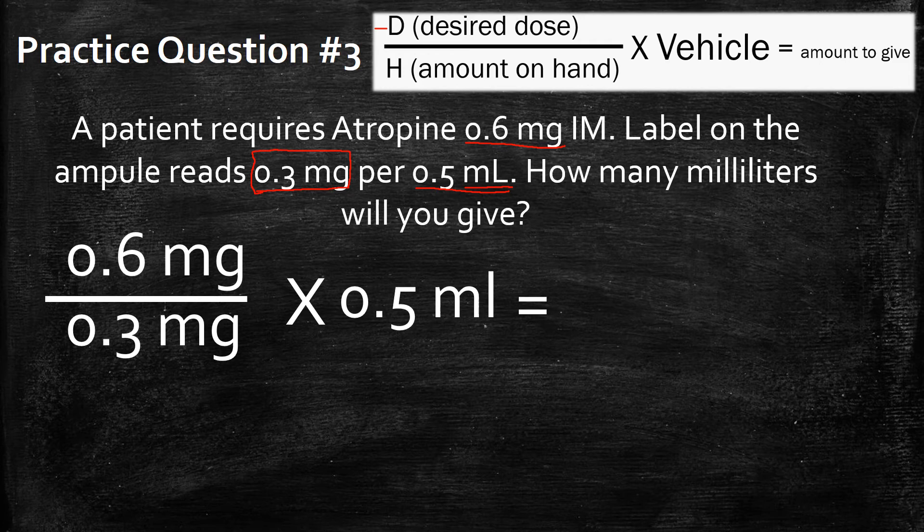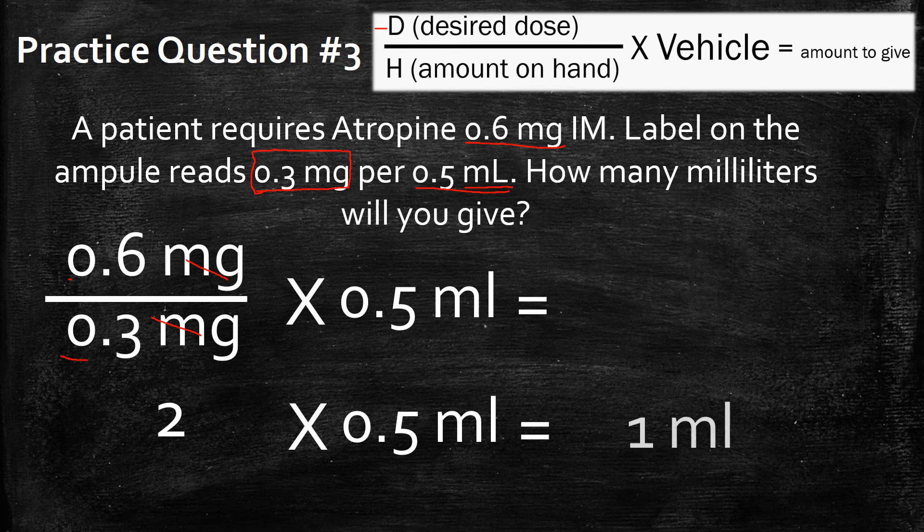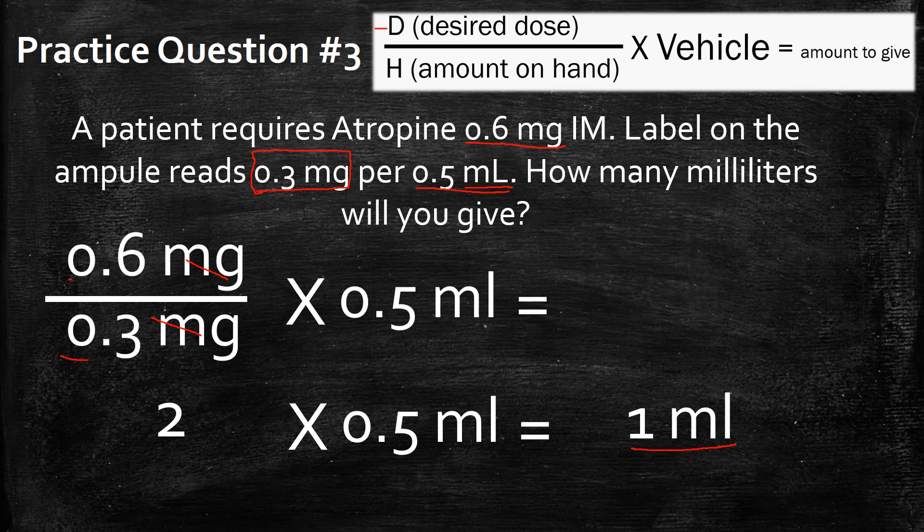So let's start solving this. 0.6 divided by 0.3 will give you two. Milligrams will obviously scratch out. Multiply that by 0.5 milliliters. Two multiplied by 0.5 milliliters will give you one milliliter. So you're going to inject one milliliter IM into this individual in order to give them the desired dose.